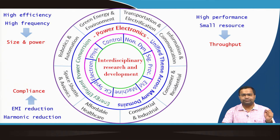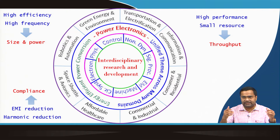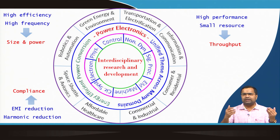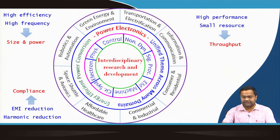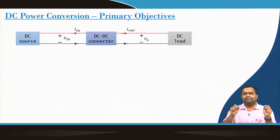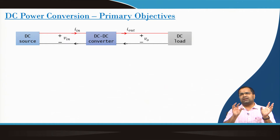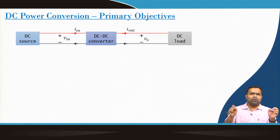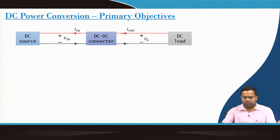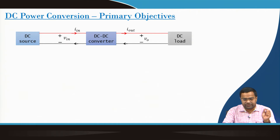Switching converters are also a source of electromagnetic interference. We need to reduce EMI as well as harmonics, which is particularly very important for automotive and space applications. In this course, we are going to primarily focus on DC power conversion systems, in which there is a DC source and one or more DC loads. The load voltage and load current can be different from the source, meaning we need a DC power processing element, which is a DC-DC converter.